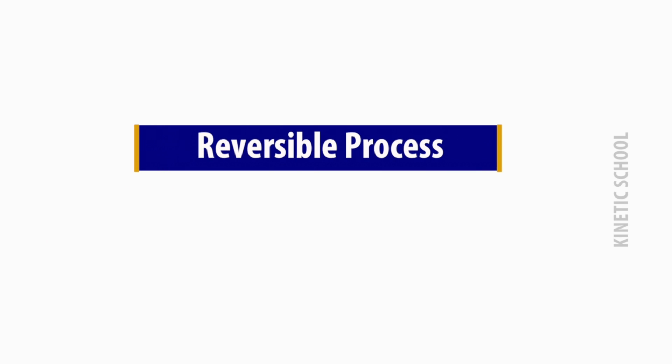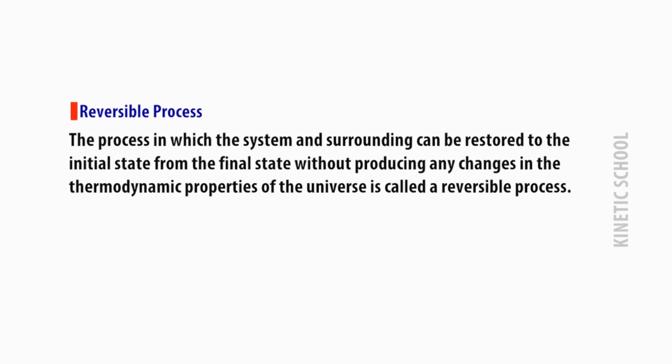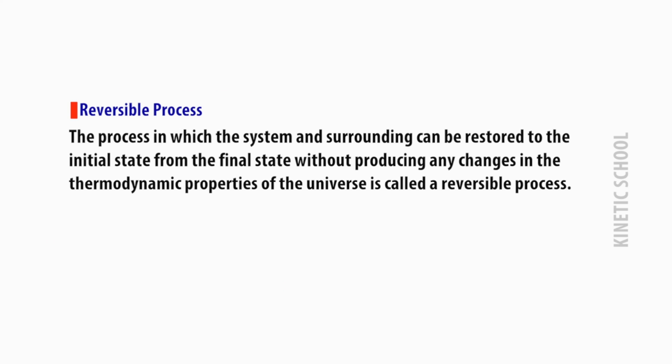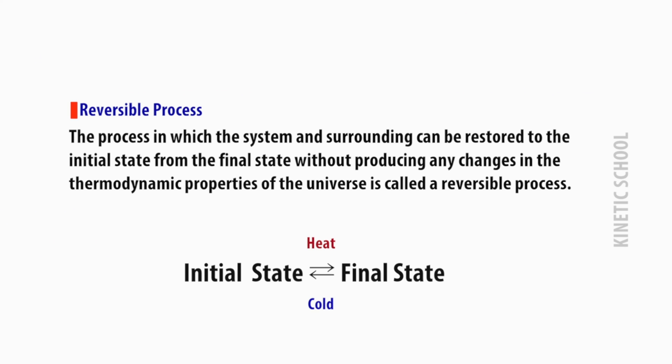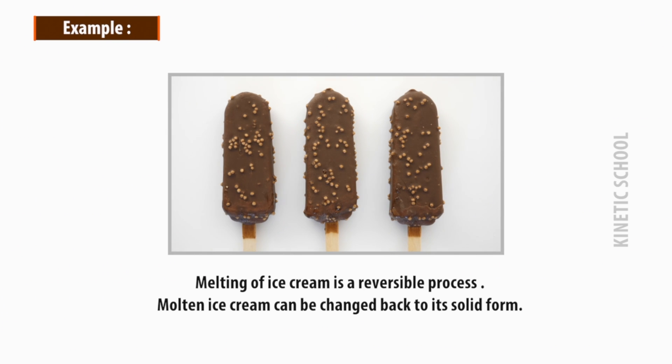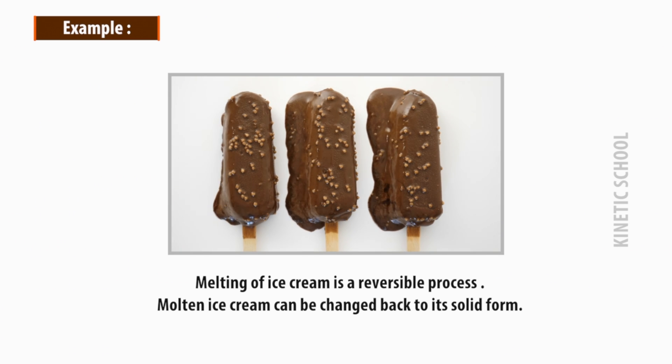A reversible process is one in which the system and surroundings can be restored to the initial state from the final state without producing any changes in the thermodynamic properties of the universe. For example, the melting of ice cream is a reversible process, because molten ice cream can be changed back to its solid form.